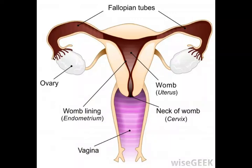The blastula is an early phase of embryonic development that occurs when the fertilized egg has divided multiple times, but before its cells have become differentiated. It consists of approximately 128 cells that form a spherical layer around a central fluid-filled hollow. Another name for the blastula is the blastosphere.